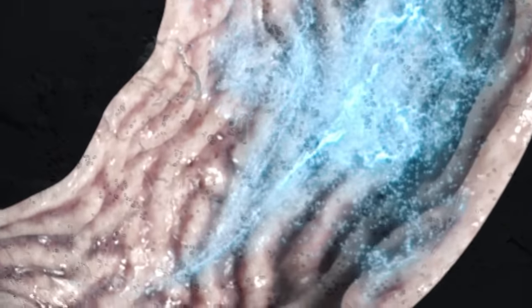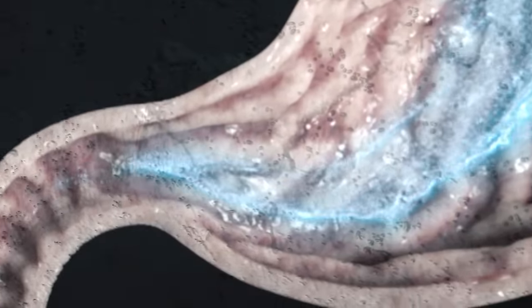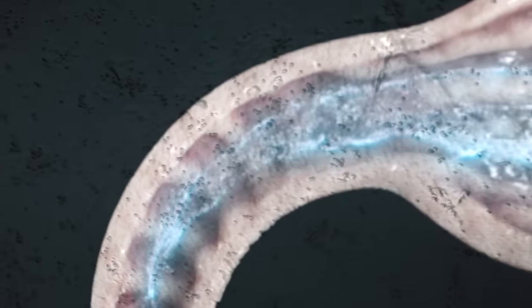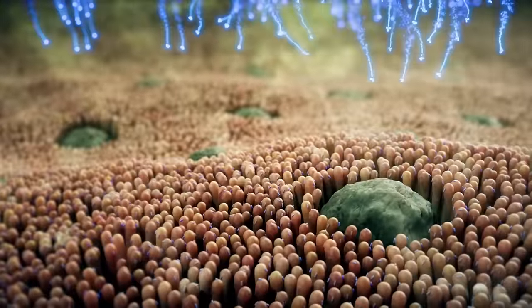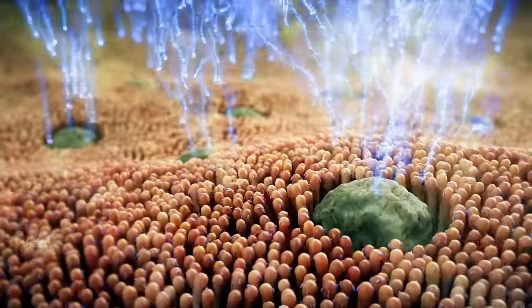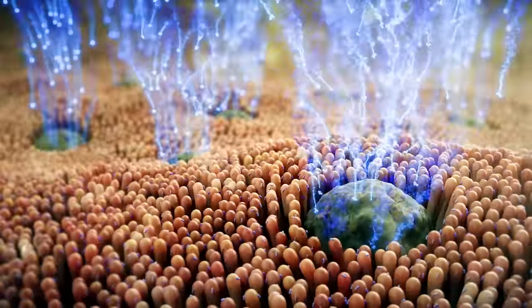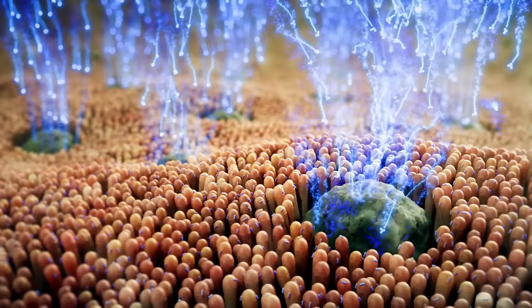The transfer factor molecules enter the intestines, where they encounter groups of immune cells called Peyer's patches. Peyer's patches are concentrated centers of immune cells, and this is where For Life Transfer Factor begins educating your immune system.